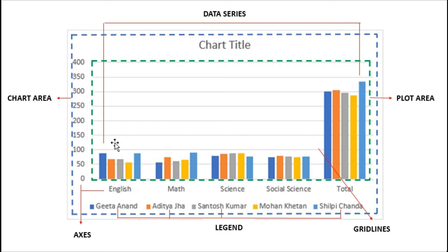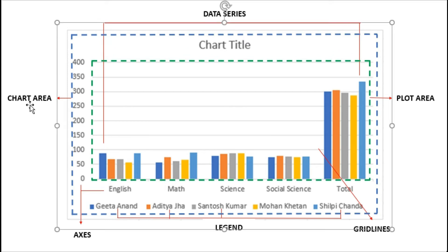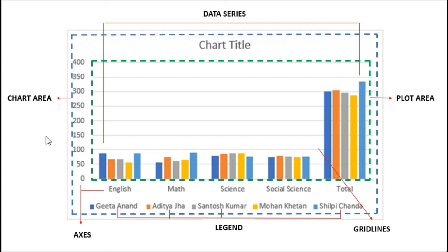Data series are the actual representation of data in the form of bars or other elements — that can be a pie or other elements. These data series display the actual representation of the data. Next is the chart area, which is a rectangular area where the chart is drawn. You can see that the blue dotted lines represent the chart area.